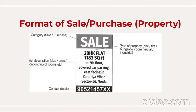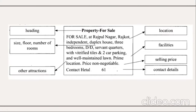For sale of property or any item, mention the title — sale or purchase — type of property, for example a 2BHK flat of 1,183 square feet, then a brief description: size, area, location, number of rooms, floor, car parking, facing direction, area name, and contact details. Another example: property for sale at Rajpal Nagar, Rajkot — independent duplex house — size, floor, number of rooms, facilities, selling price negotiable, other attractions, and contact details.